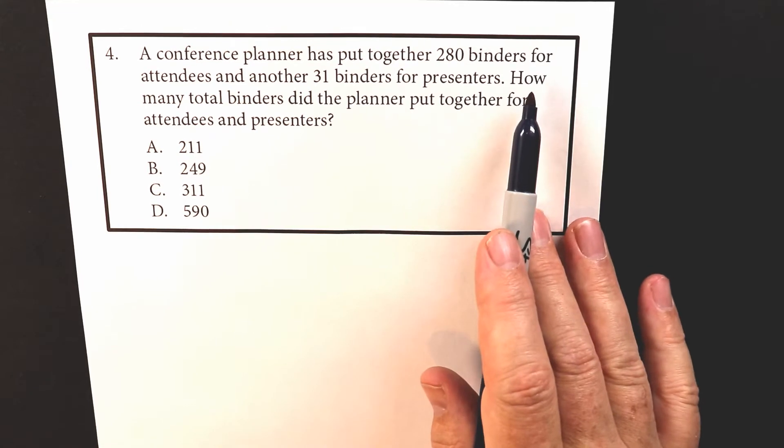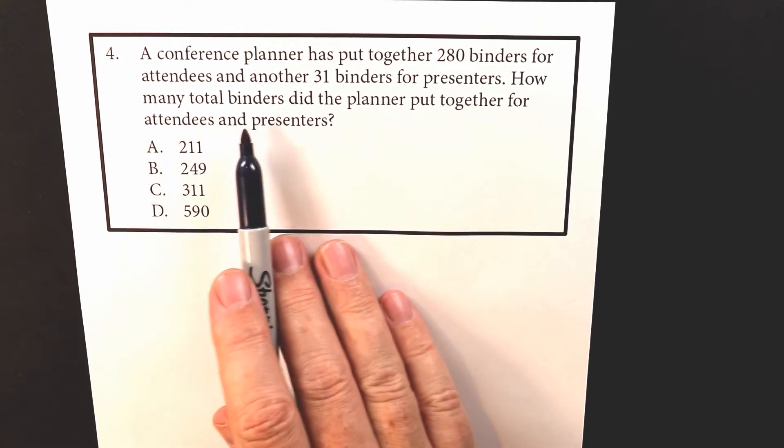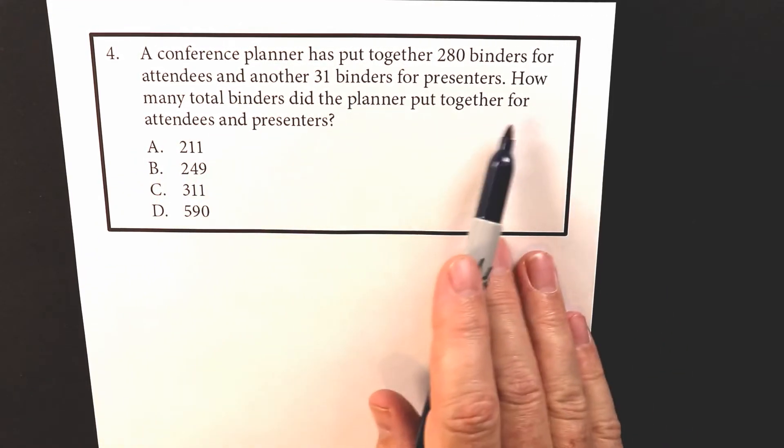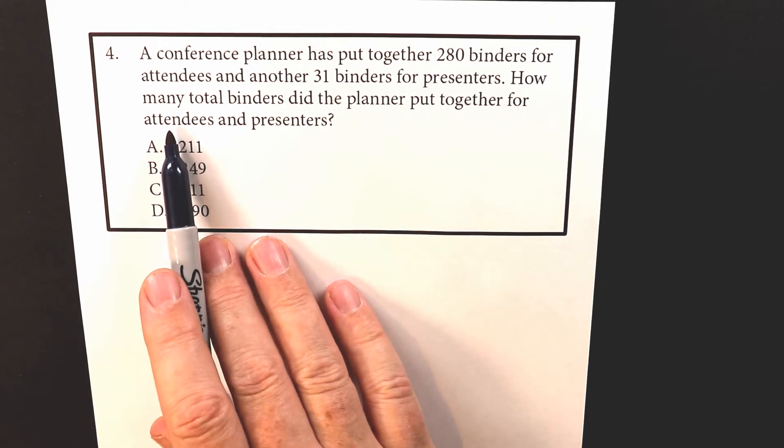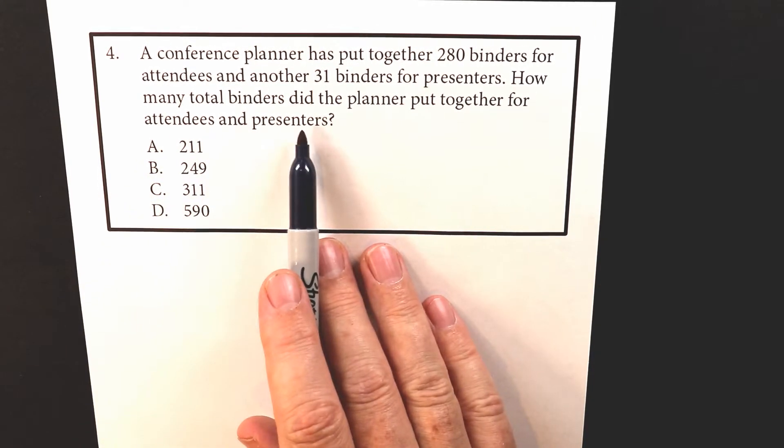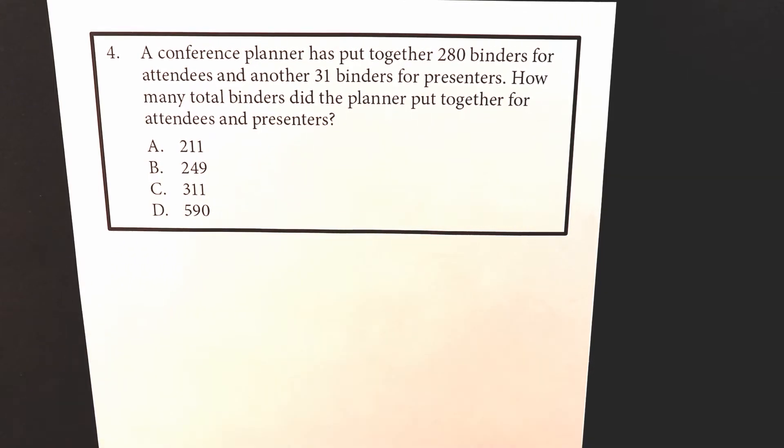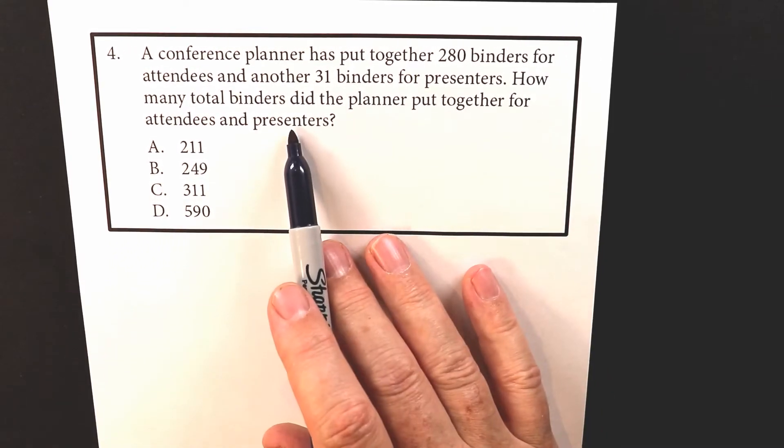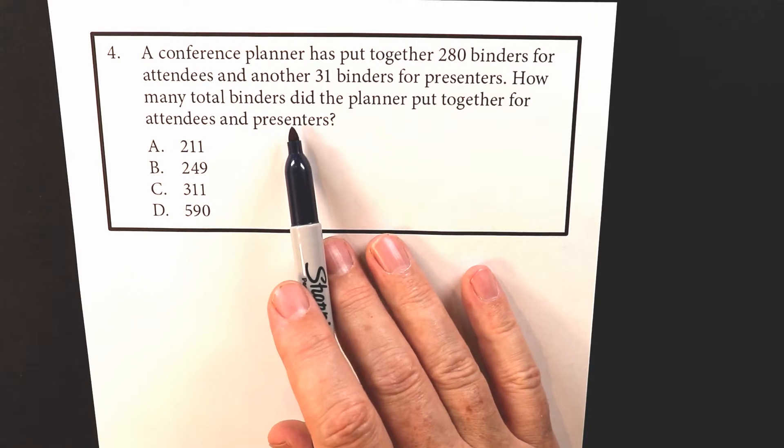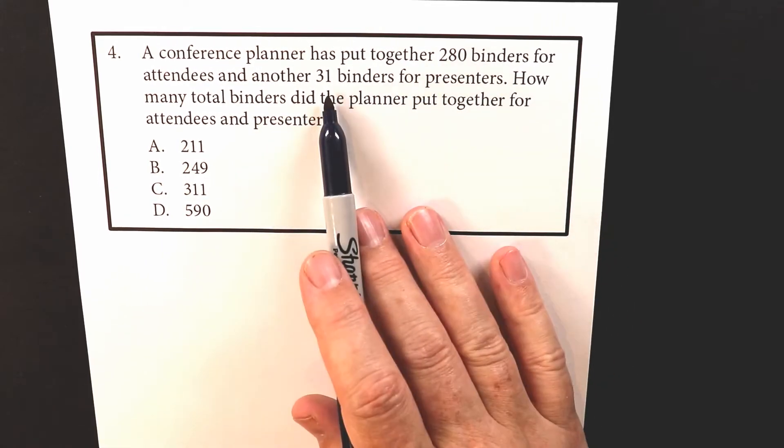Okay, so for this one, they're asking you further, how many total binders did the planner put together for both the attendees and the presenters? That's the people that are going and the people that are talking. So for this one, this is an addition problem. So we're basically adding 280 to 31.